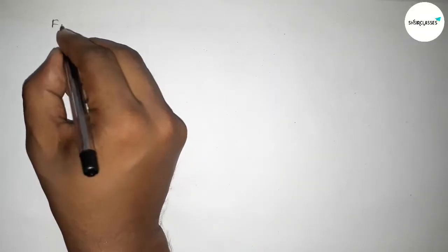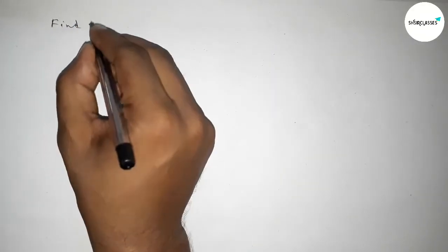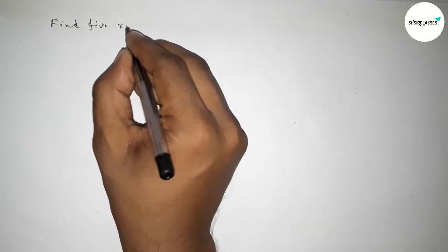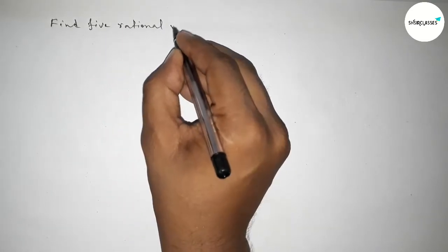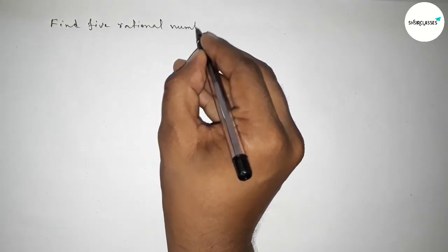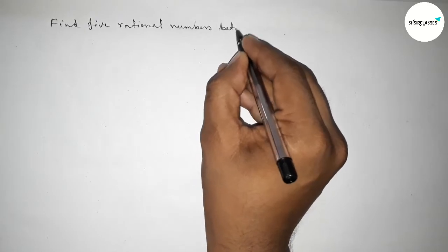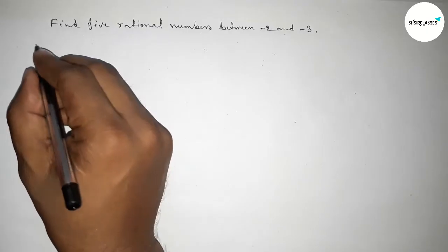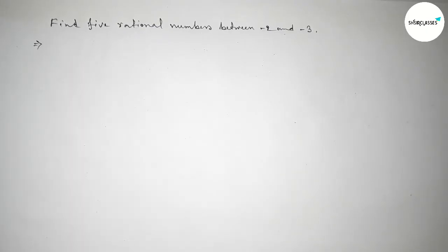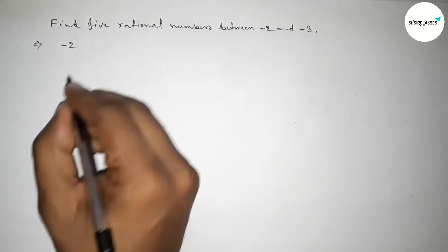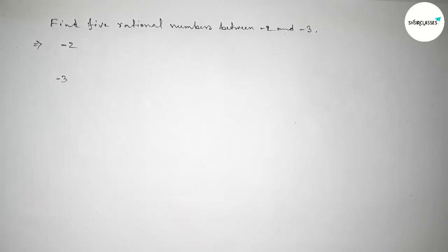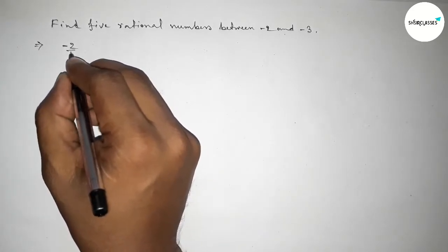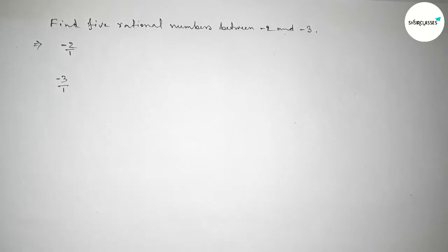Hi everyone, welcome to Sys Chair Classes. Today in this video we have to find out five rational numbers between minus 2 and minus 3. So let's start the video. First of all, write down here the given two numbers: minus 2 and minus 3. Now we can write minus 2 as minus 2 over 1, and minus 3 as minus 3 over 1.